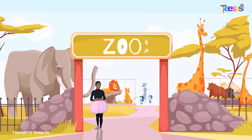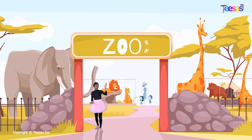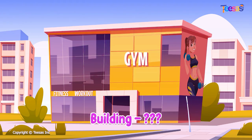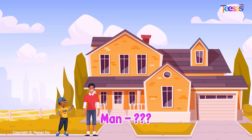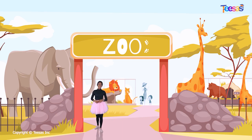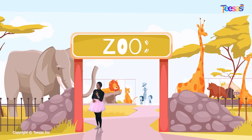Now that you know about height, you should be able to identify tall or short people or things around you. Amazing Maticians, it's time for you to tell me if these objects and people are tall or short. The building is tall. The pole is short. Well done, Maticians! Remember that height means how tall or how short something or someone is. Have fun comparing the heights of objects and people around you. See you next time. Bye-bye.